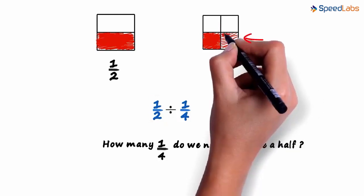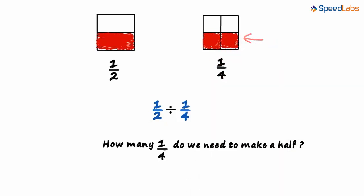If we color another part in the square, we can see that exactly half of the square is colored, which is one by two. This means that we need two one by fours to get one by two. So the answer is two.